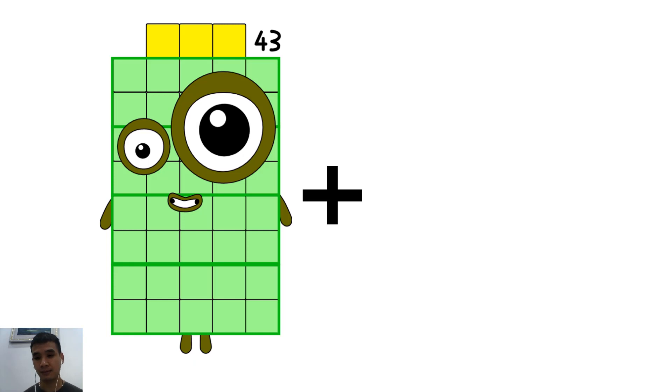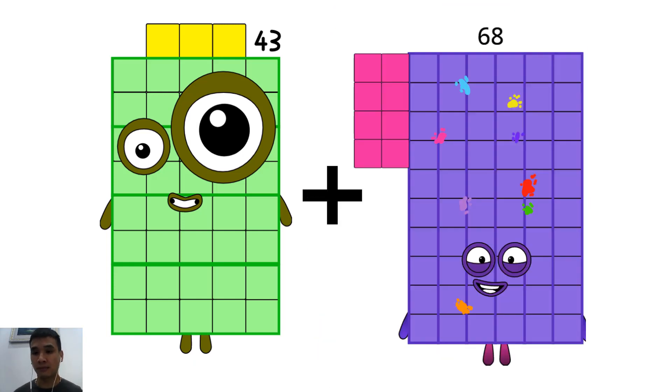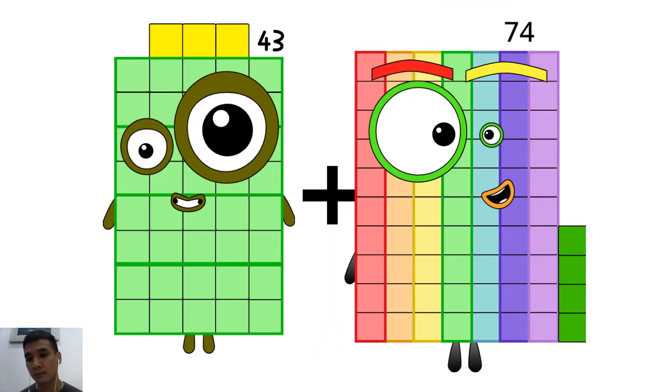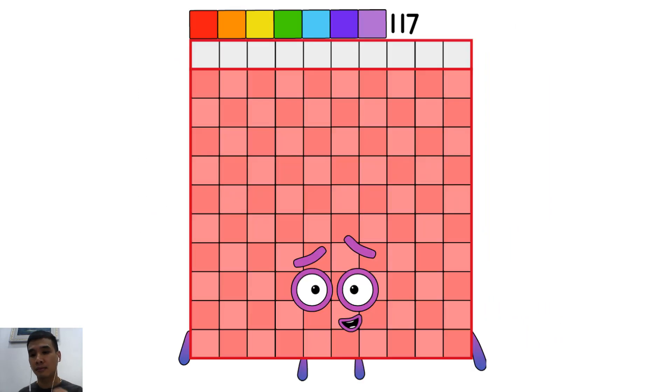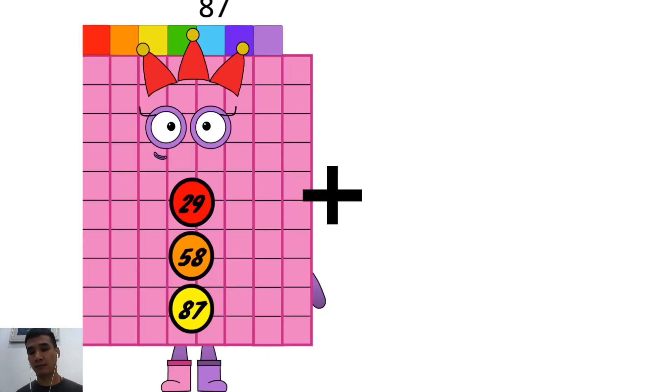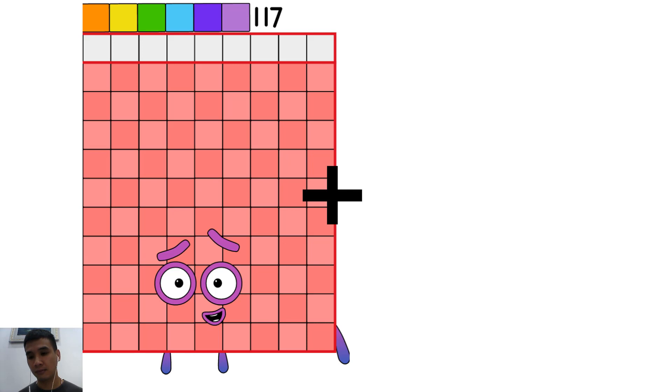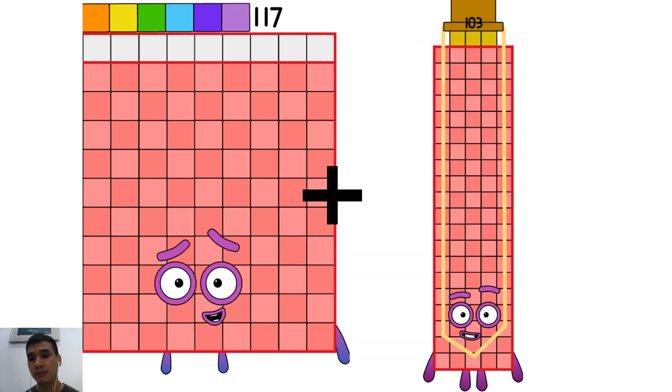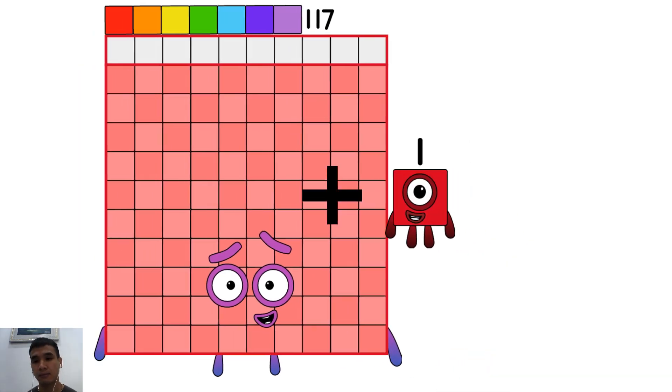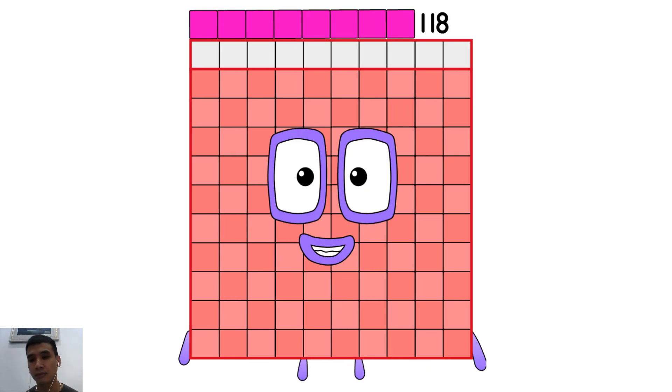43 plus 74 equals 117. 117 plus 1 equals 118.